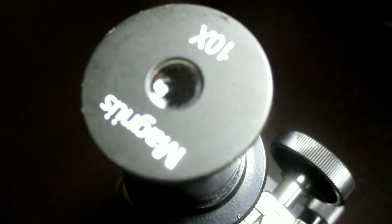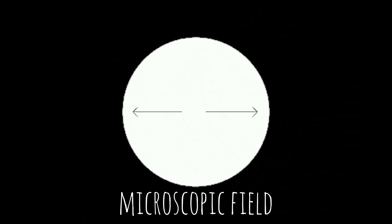First, we need to understand the basic fact about field of view of a microscope. In simple terms, it is the area you see under the microscope for a particular magnification. So this diameter of the circle that you see is the field of view.